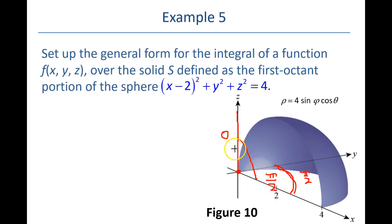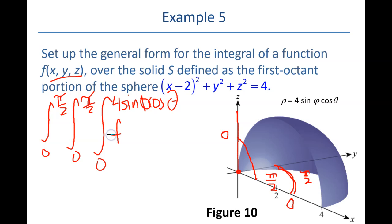But then, remember, the other two are angles, and we need the first octant. So, that's 0 to π/2, 0 to π/2, for my two angles. And then ρ is going from 0 to 4 sin φ cos θ. And then we have our function, this f(x,y,z), which we will change to ρ, φ, and theta.